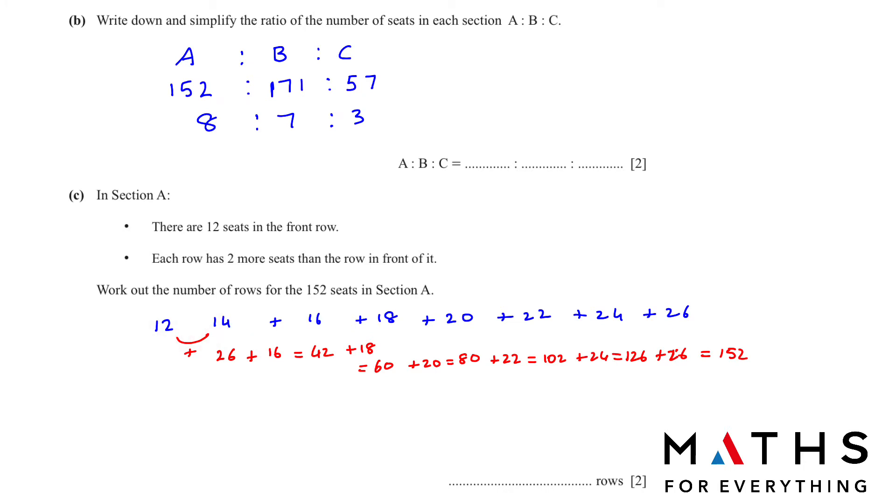12 plus 14, 26. 26 plus 16, 42. 42 plus 18, 60. 60 plus 20, 80. 80 plus 22 like that till 152. So how many rows are there? 1, 2, 3, 4, 5, 6, 7, 8. 8 rows. I hope you understood.